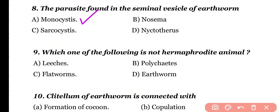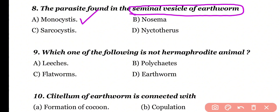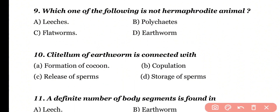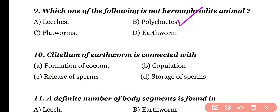Monocystis is a parasite found in the seminal vesicle of earthworm. Question number 9. Which of the following is not a hermaphrodite animal? Leeches, Polychaetes, flatworms, or earthworm. Correct answer is option B. Polychaetes have separate sexes; they are not hermaphrodite. Rather, they are dioecious animals. So correct answer is option B.